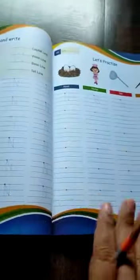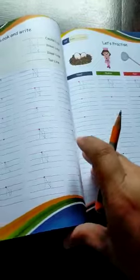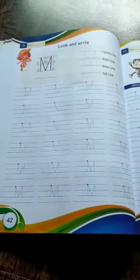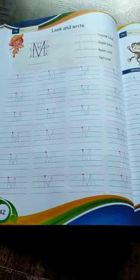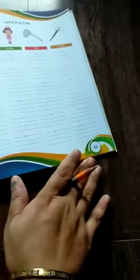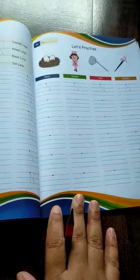We also have two pages of letter N. Today you have to do four pages: page number 42, 43, 44, and 45. That's enough for today. Bye students.